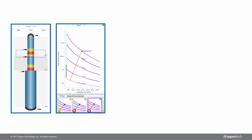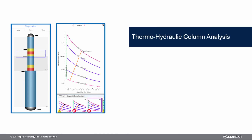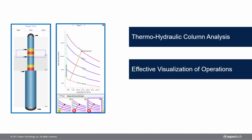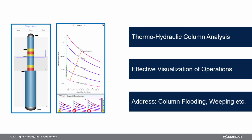This capability comes over and above the much-valued Thermal Hydraulic Column Analysis capability introduced in previous versions. That feature offered users visualization into the thermal and hydraulic functioning of columns to preemptively avoid or address operational issues such as column whipping, jet flooding, downcomer backup, and more.